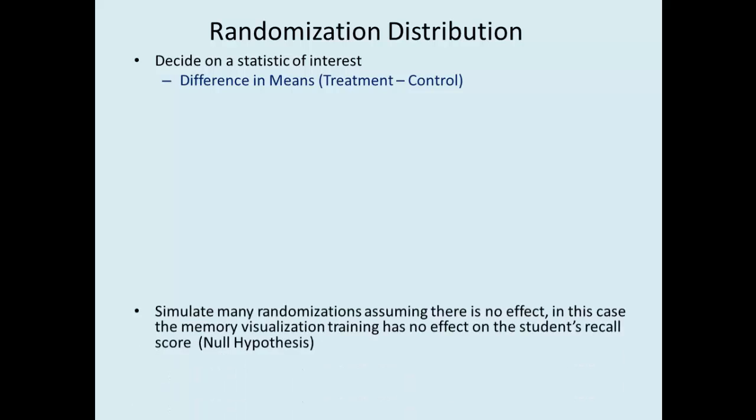Creating a randomization distribution. First, you need to decide on a statistic of interest. In this case, we'll look at the difference in means between the treatment and control group.